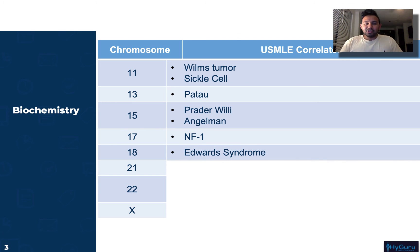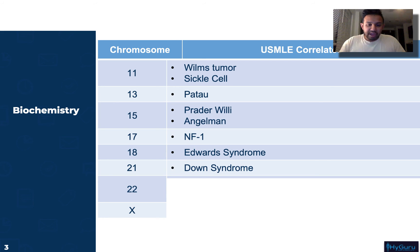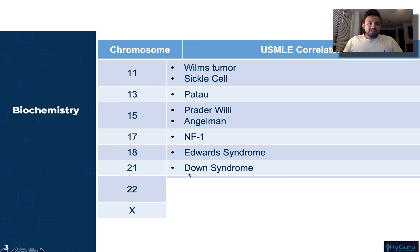Chromosome 18 is going to be related to Edwards syndrome. These patients are going to have rocker bottom feet and overlapping digits. To remember your trisomies: trisomy 13 — at 13 you hit puberty, so P for Patau, P for puberty. At 18, you elect somebody, so E for Edwards, E for election. And at 21, you go down — so Down syndrome is trisomy 21.